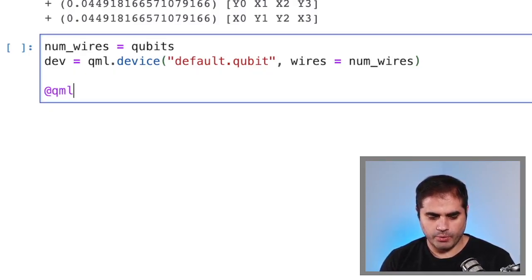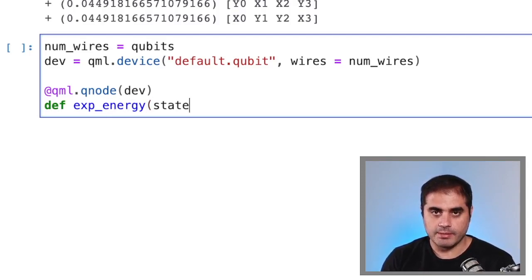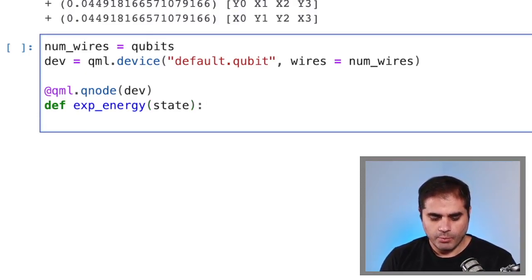Now we put our header, we build our QNode with this device, and let's define our circuit. Our circuit will be, let's call it exp_energy or expectation value of the energy. And it will take as input a state, which will be represented in the Jordan-Wigner representation as a Python array.